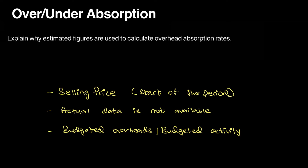You would not know what salaries you'd have to pay, whether you'd need to hire another worker, or what your maintenance cost would be. These overheads will not be available at the start of the year, so you don't have actual data — you have to rely on budgeted overheads and budgeted activity. You must estimate your electricity bill, maintenance cost, machine hours, and labor hours to calculate the overhead absorption rate.